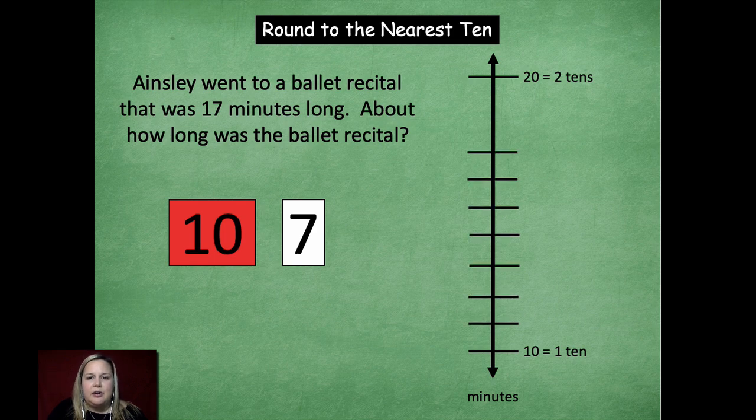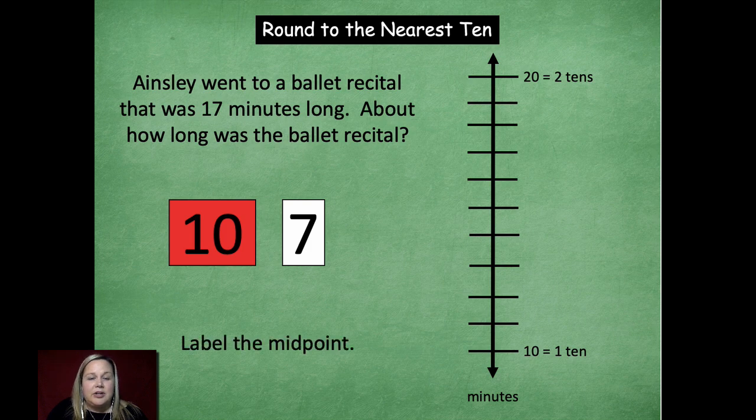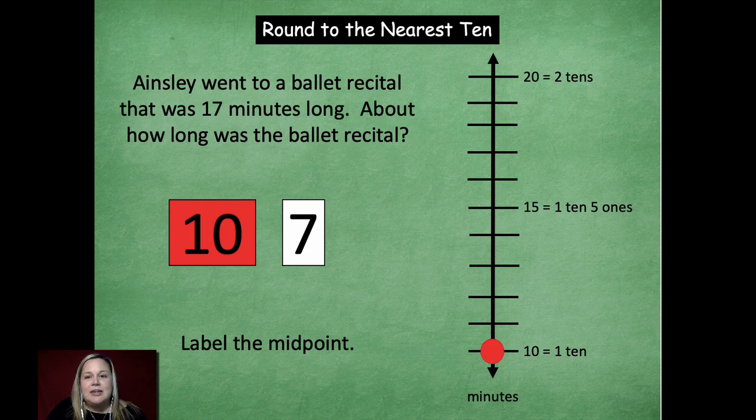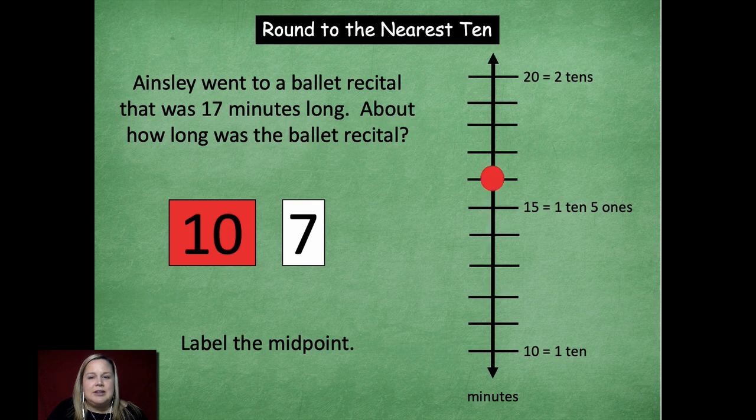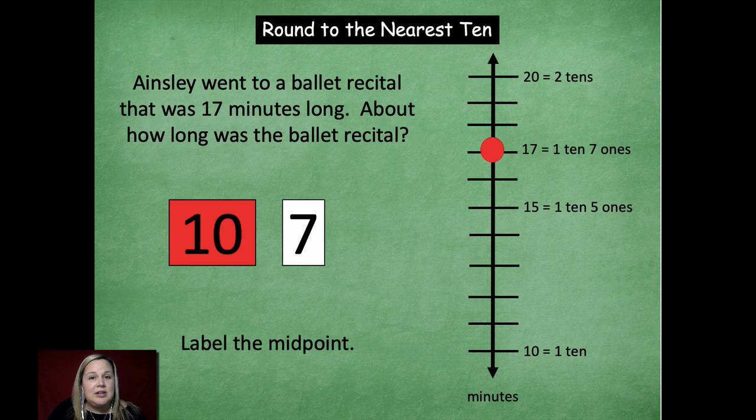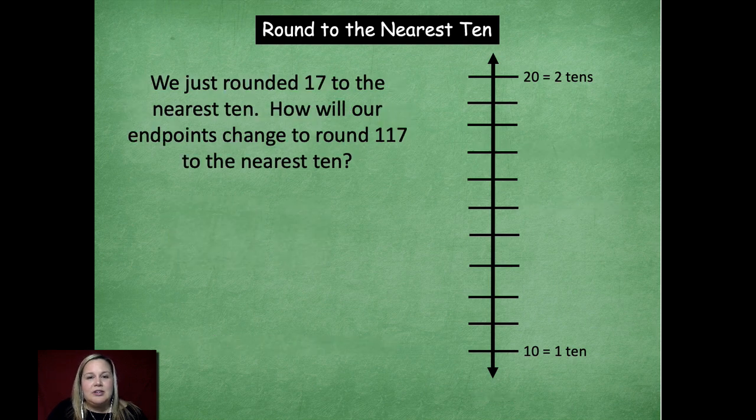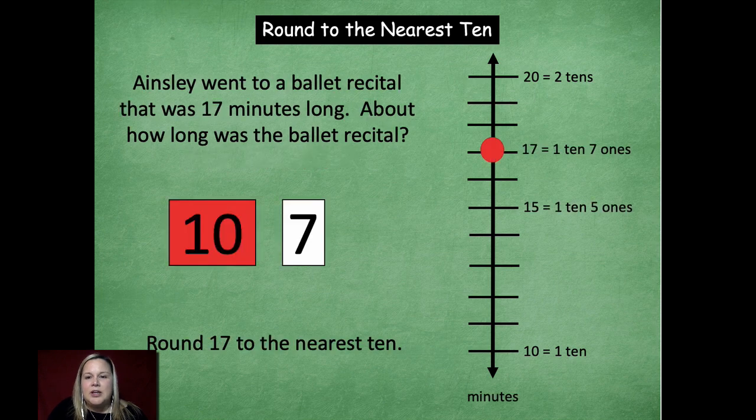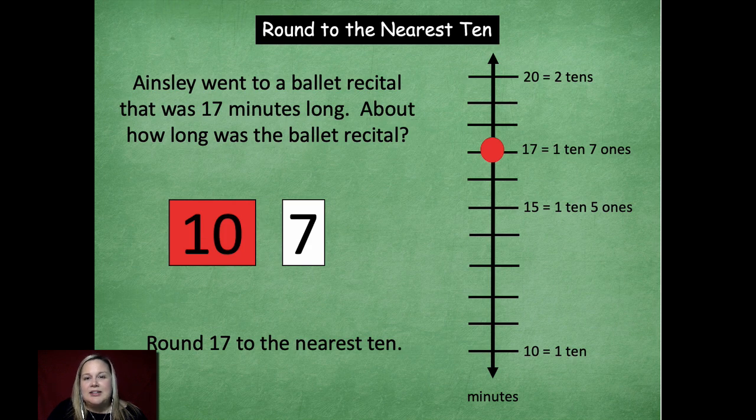So we're going to go in and put in our lines from ten to twenty. We're going to label the midpoint which is right smack dab in the middle with that one ten five ones. Now we're going to count up until we get to seventeen. So as we go we are up to fifteen, sixteen, seventeen. So one ten seven ones in unit form. Now we're going to round to the nearest ten. So as we look, that is going to be twenty because it's only three spaces away from twenty and seven spaces away from ten. So seventeen rounded to the nearest ten is about twenty.